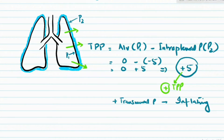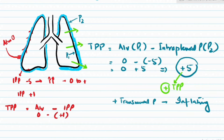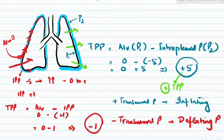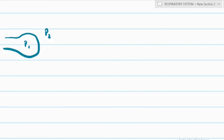What happens if intrapleural pressure becomes positive — for example due to a penetrating chest injury? Air flows from atmosphere (0) into the pleural space until intrapleural pressure equals atmospheric pressure (0). In that case, trans-pulmonary pressure becomes 0 minus (+1), which is a negative value. A negative trans-pulmonary pressure means force moves from outside to inside — which is why in pneumothorax the lungs collapse.